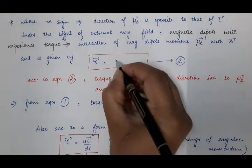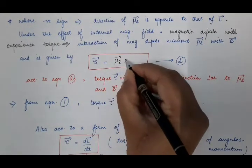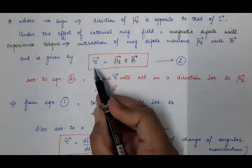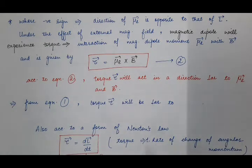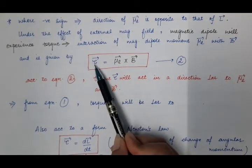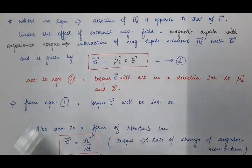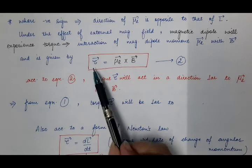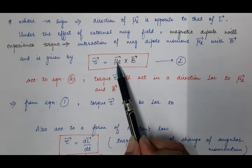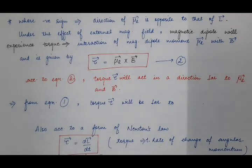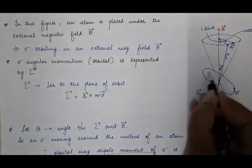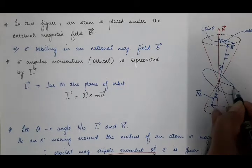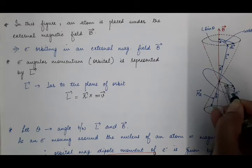The torque tau equals mu_L cross B vector. The resultant of a cross product is always perpendicular to the plane containing the two vectors, so the direction of this torque is perpendicular to both mu_L and B. The direction perpendicular to both B and mu_L is in the plane in which the electron is moving, so the torque acts in that direction.